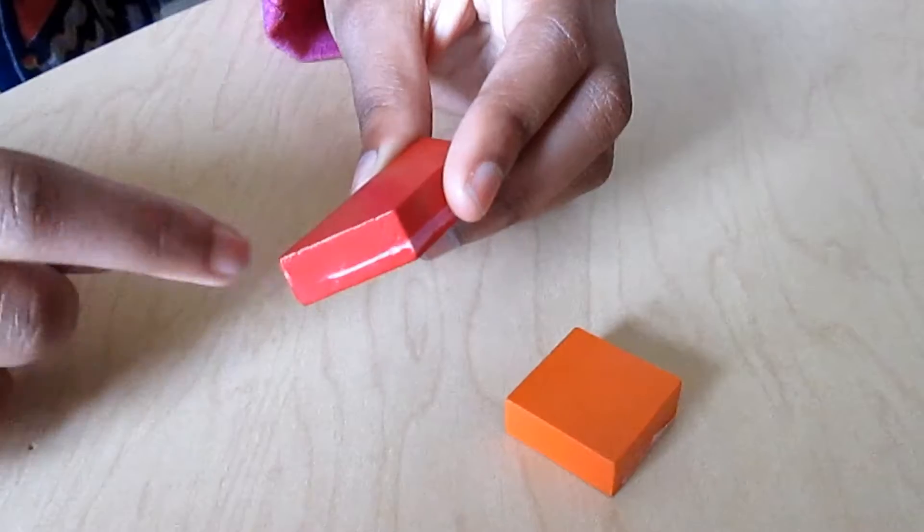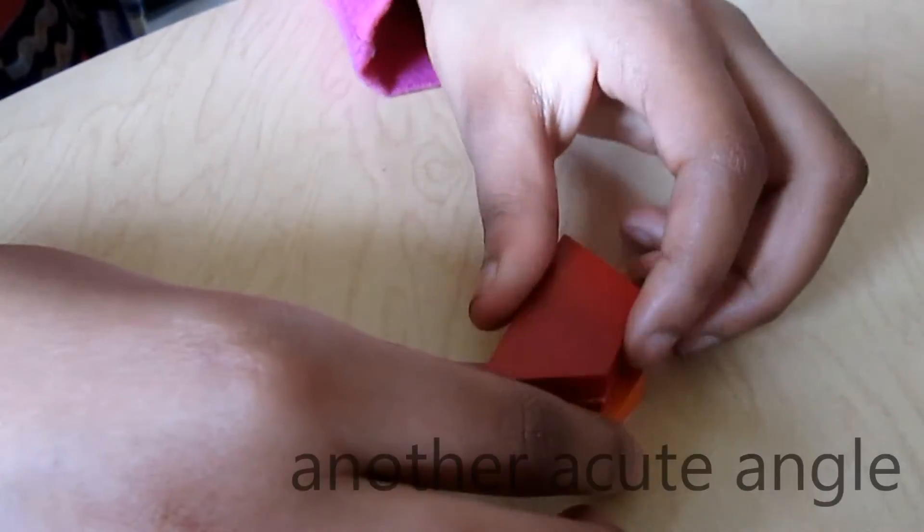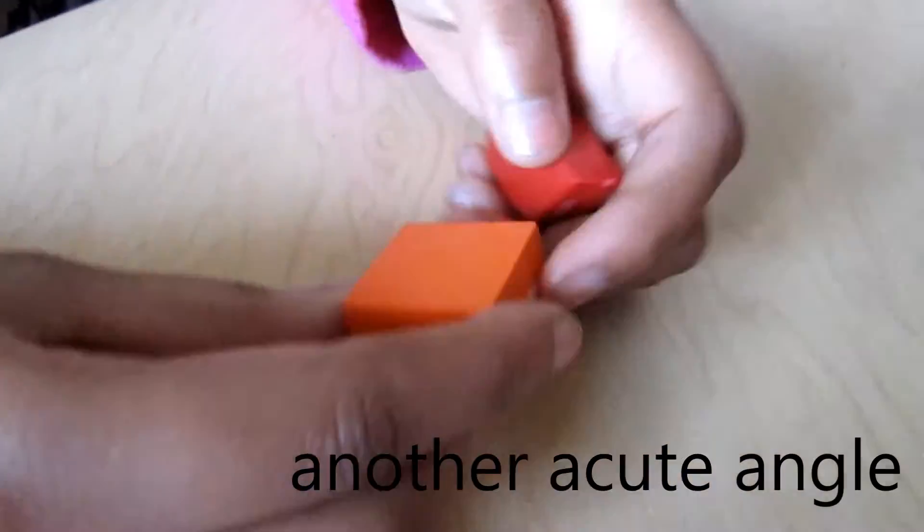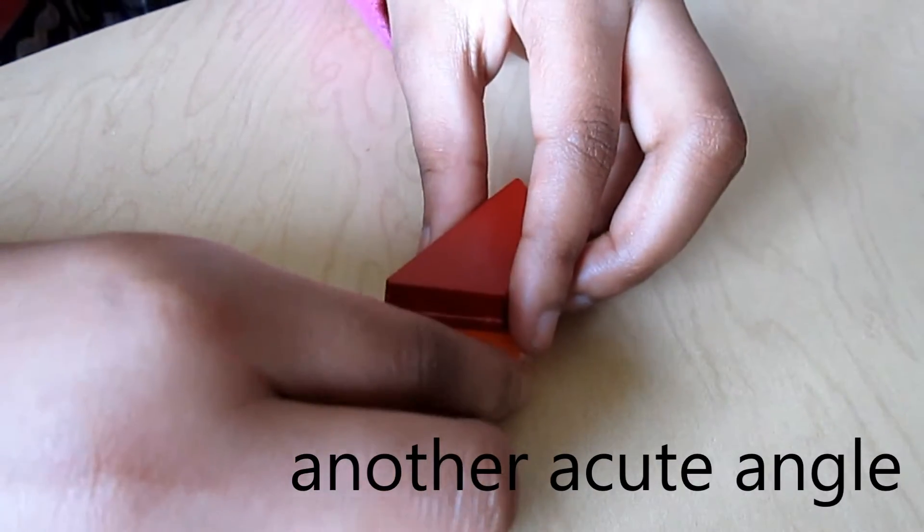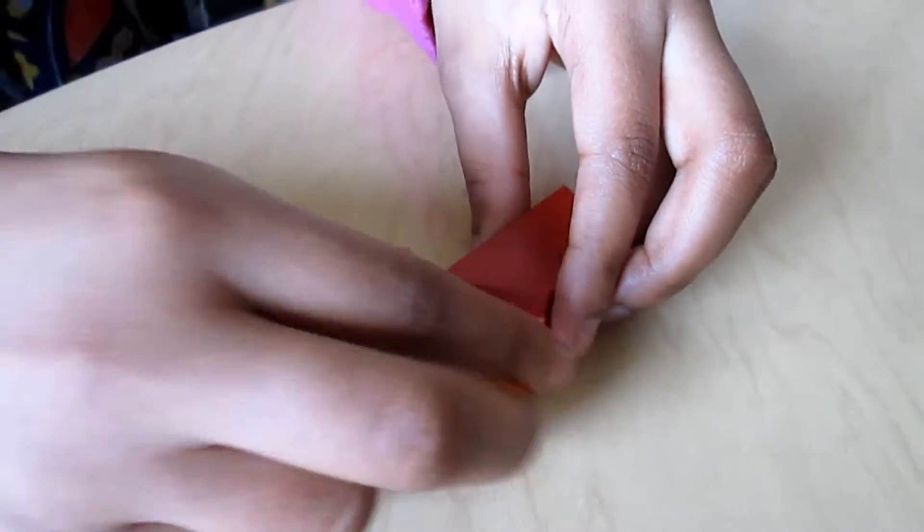I'm doing a trapezoid, and this angle is acute because, like here, it's a right angle, and anything smaller than 90 degrees is an acute angle.